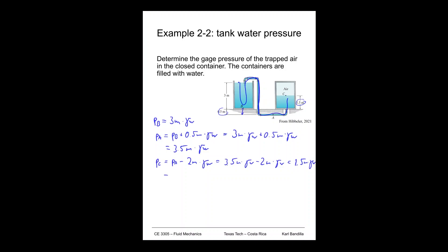So if I put the numbers in there, I get 1.5 meters times 9,810 newton per cubic meters. And that gives me 14,715 pascals. The meters reduce to square meters. And that is of course 14.7 kilopascals.